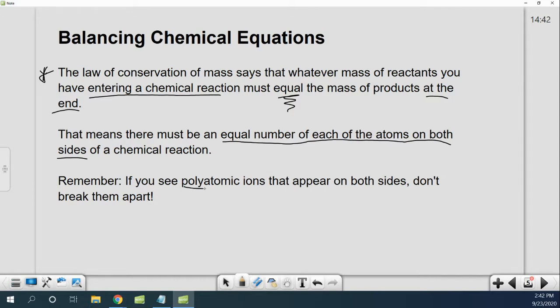A little tip before we get started. If you see a polyatomic ion, remember more than one thing, like a nitrate. If that nitrate appears on both sides, try not to break them apart. It'll be way easier to count how many nitrates I have than to count it as a single nitrogen and three oxygens. Just a little balancing tip that makes things a lot faster.